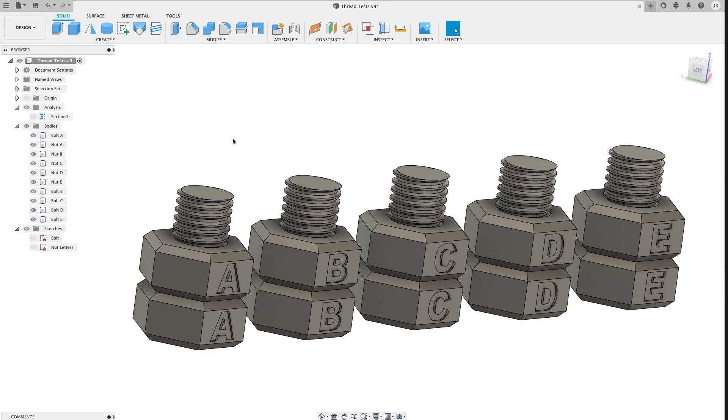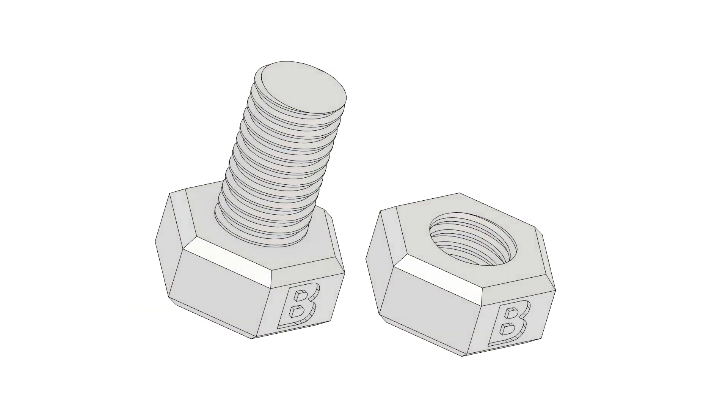We'll use the push-pull tool on each set to add some extra clearance to each nut and bolt. For the type B thread, let's add 0.05 mm of clearance between the four spiraled surfaces that make the thread.